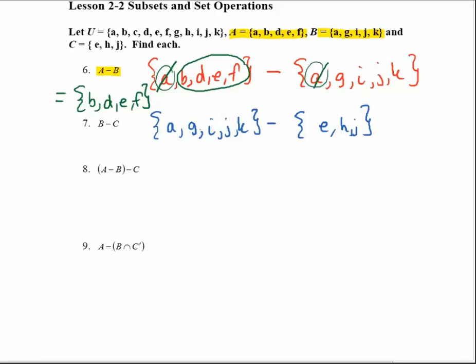So then that lets me compare these two, and it looks like the J is the only element that's going to cancel off. So then the remaining members are A, G, I, and K.